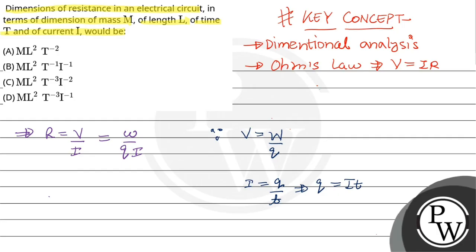Now we know Q equals I into t, so resistance R equals W divided by I squared into t. Now for work, we can take work equals force into displacement. We will take the dimensions of these quantities.